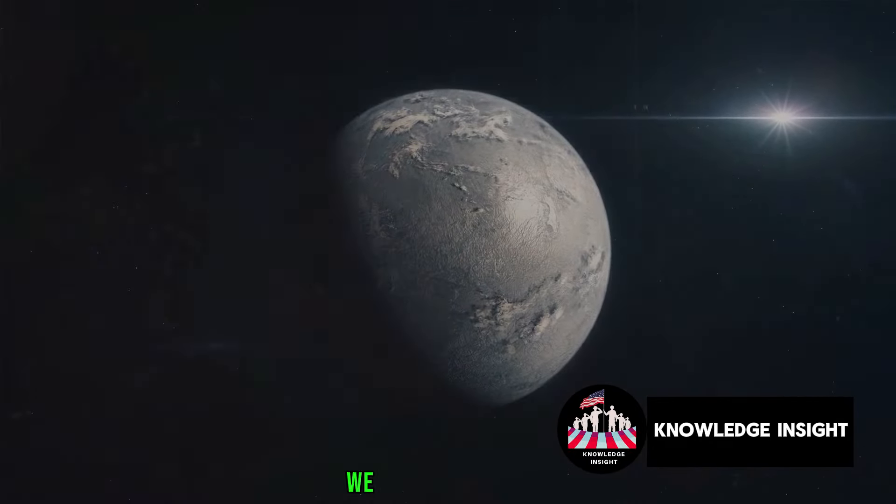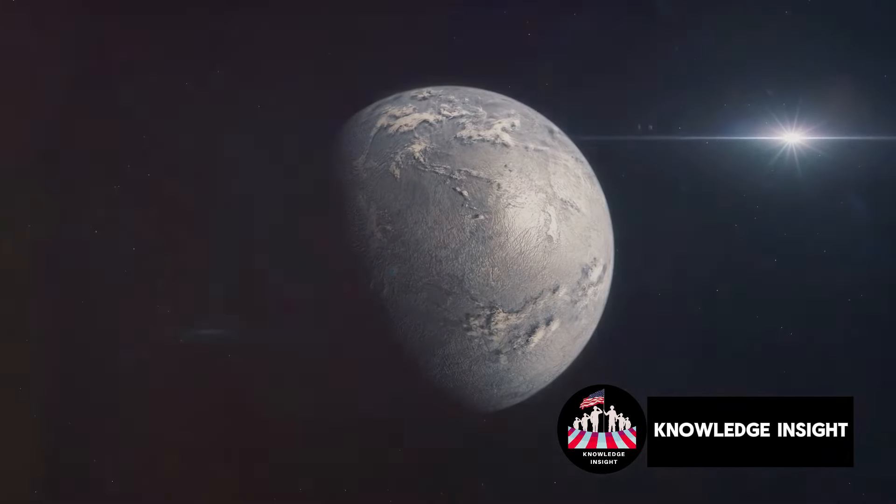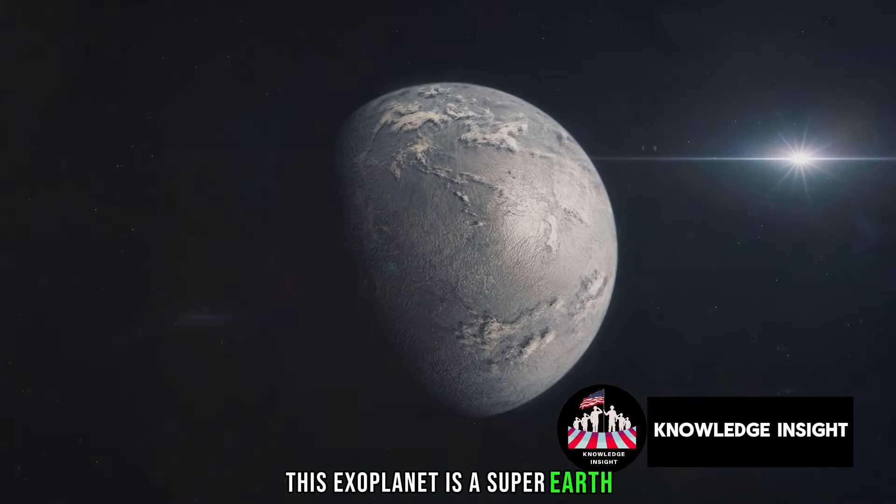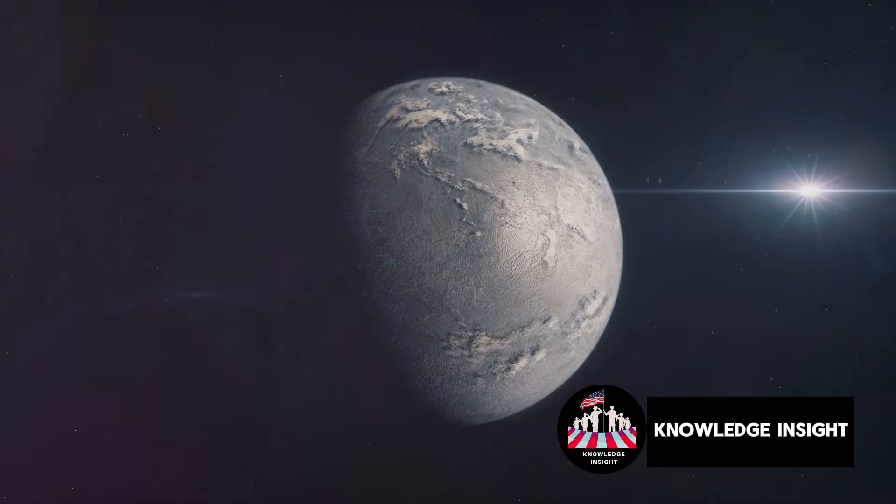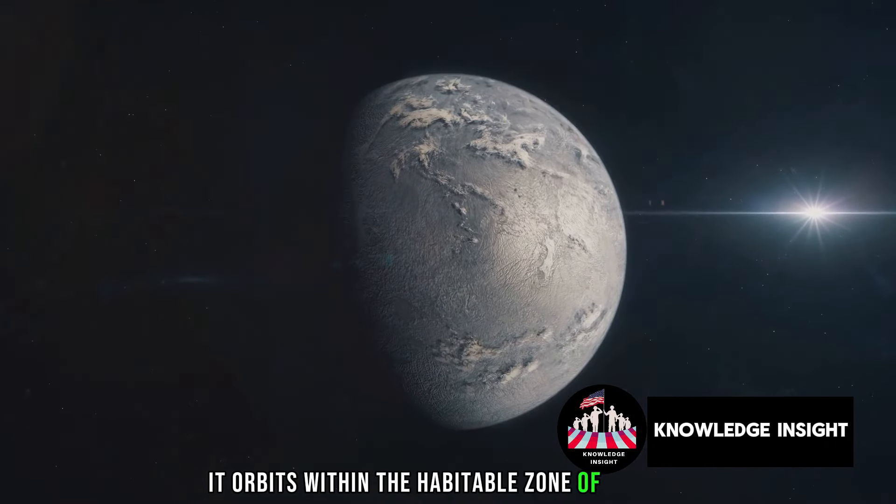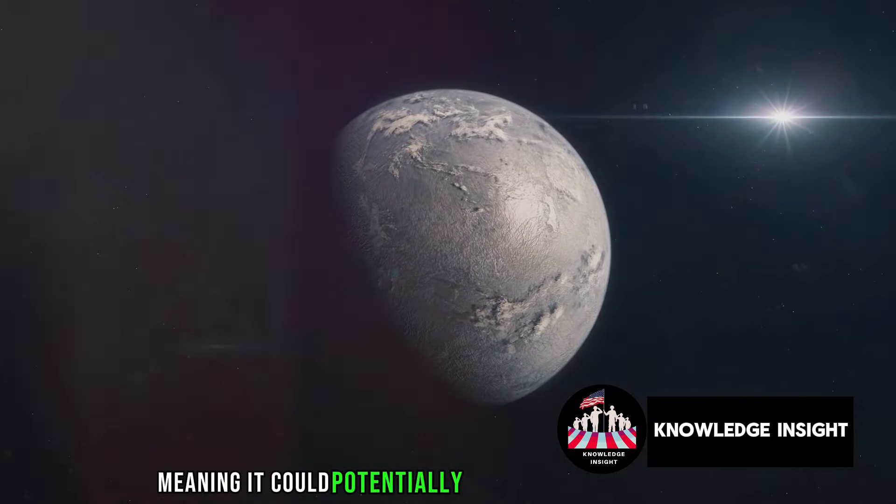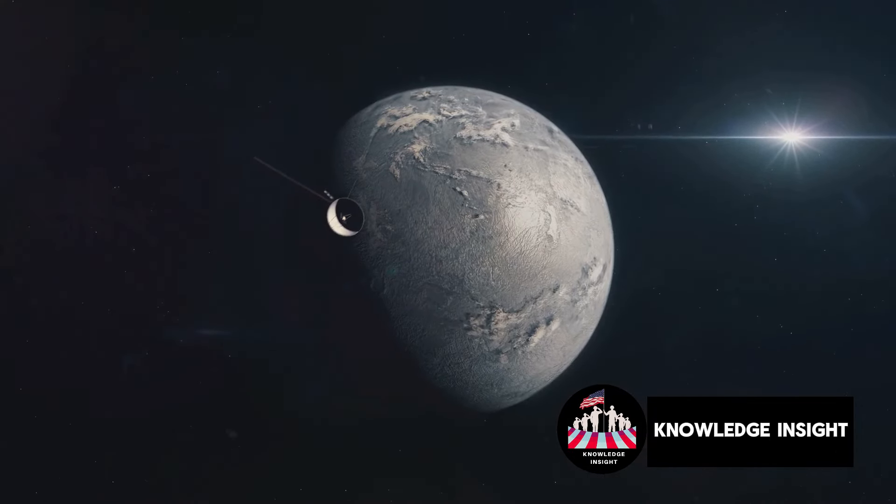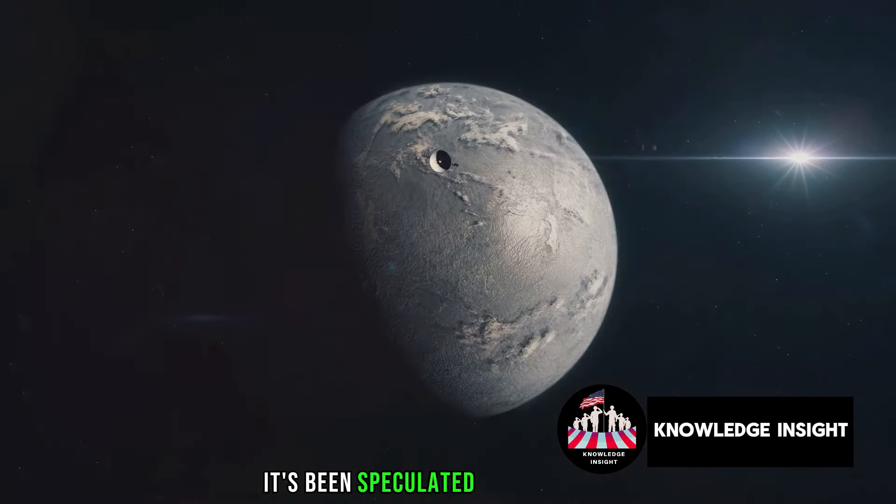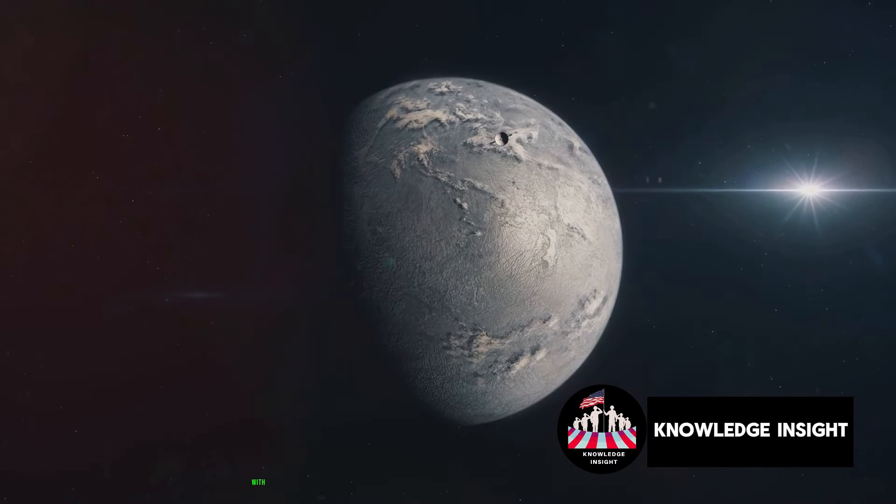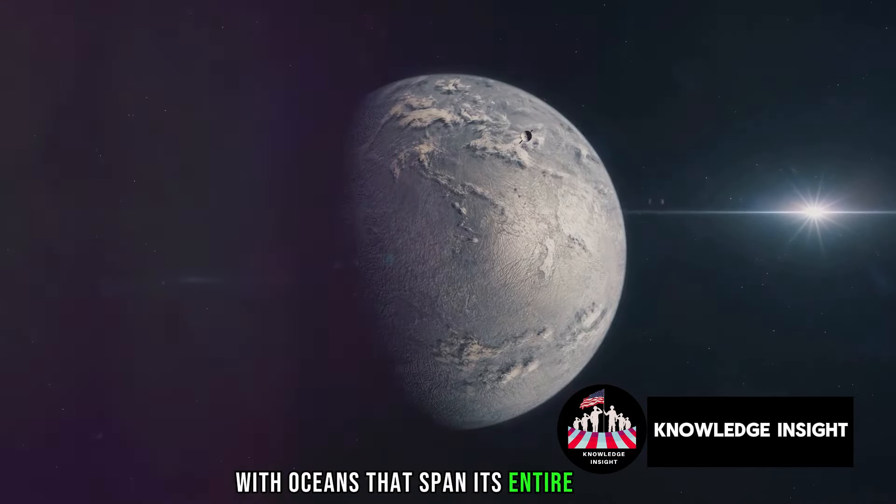At number 4, we have Kepler-62f. This exoplanet is a super-Earth, about 40% larger than our own planet. It orbits within the habitable zone of its star, meaning it could potentially support life as we know it. What's more, it's been speculated that Kepler-62f might be a water world, with oceans that span its entire surface.